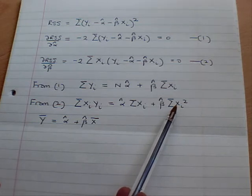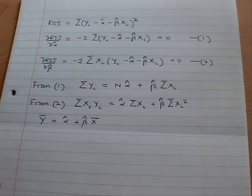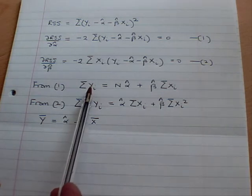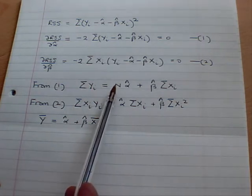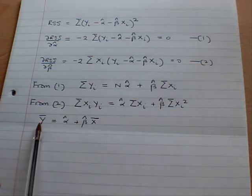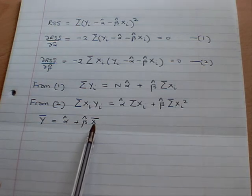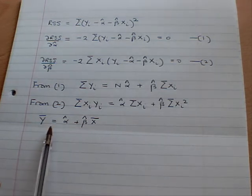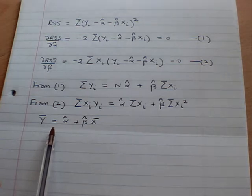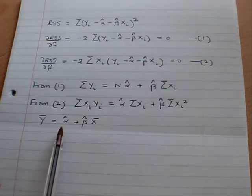Now one interesting thing to note straight away is that from the first normal equation we can divide through by the number of observations n and we can write it as y bar equals alpha hat plus beta hat times x bar. In other words, the least squares regression line passes through the sample means of the data.